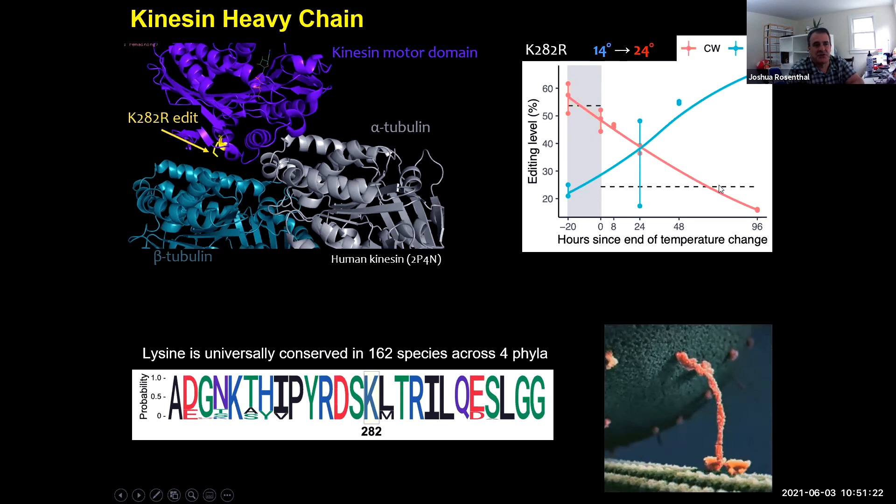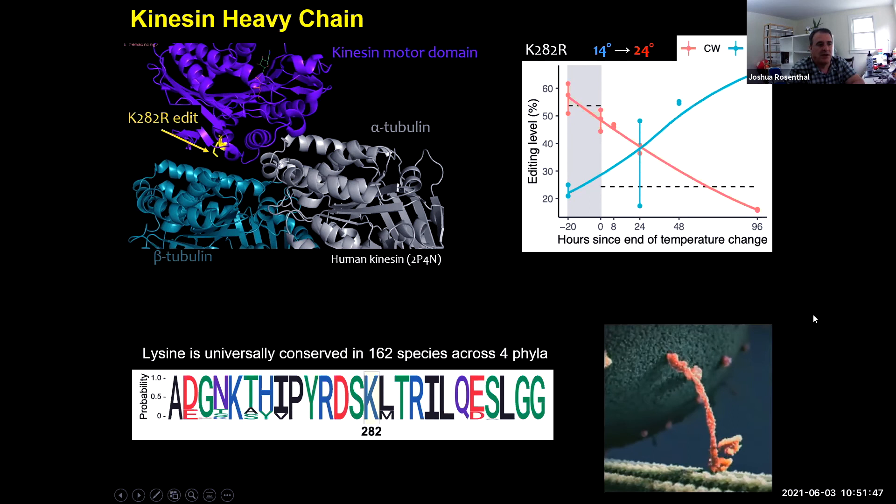Again, this site goes through large changes in editing level. We did an experiment in squid ganglia going from 14 to 24 degrees and you see editing levels going up to about 60% when you go from warm to cold and then going down from 60 to about 20% when you go from cold to warm.